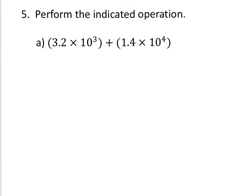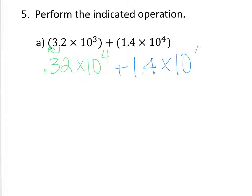So we need to increase the exponent with the 3, and we can make them the same. Or you could decrease the exponent for the second one, but why don't we increase the first one? So to increase the exponent, we want to move the decimal here to the left. So we need to increase this by 1, so we're going to move the decimal 1 to the left. So we have 0.32 times 10 to the 4th now, plus 1.4 times 10 to the 4th.